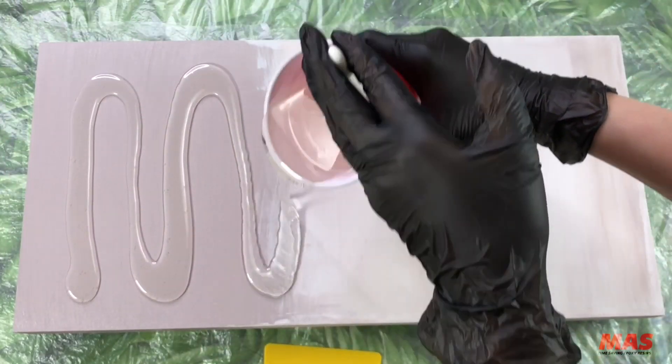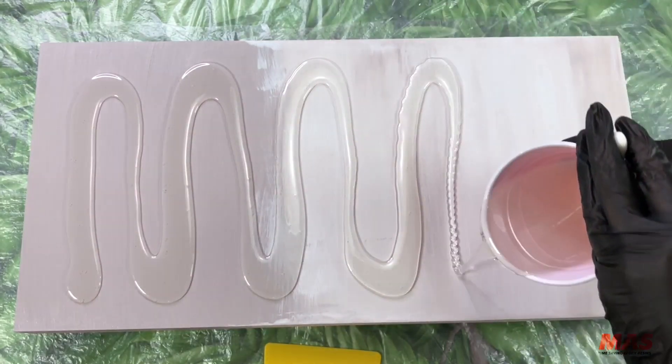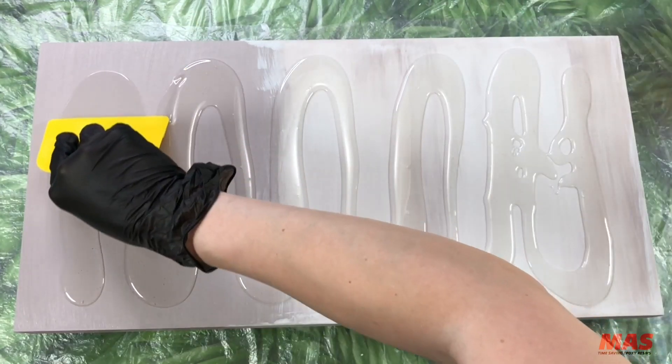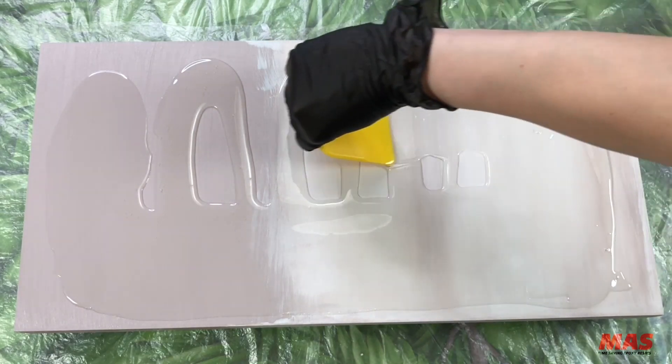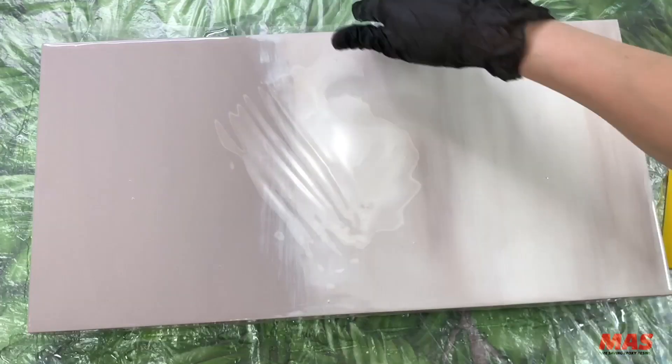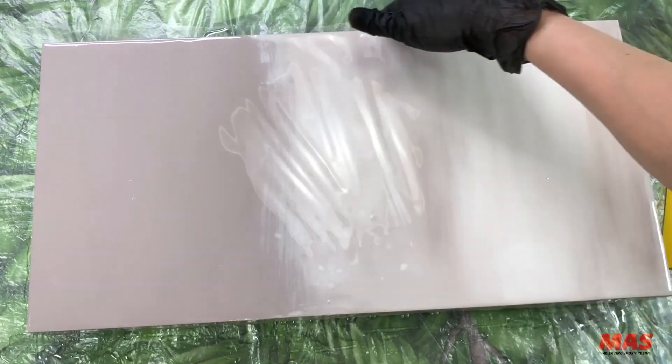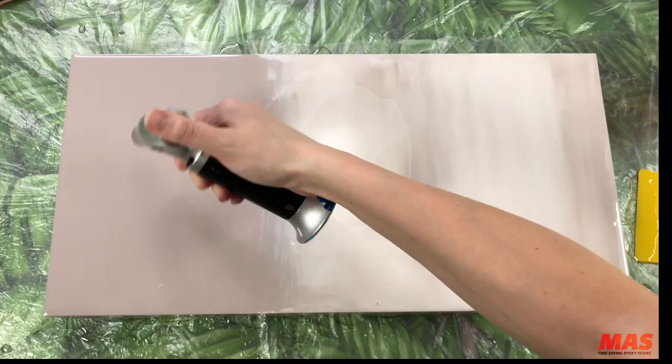I used moss epoxy's art pro system and I'll be using that throughout the rest of the video. Once your epoxy is evenly spread all of the bubbles are popped and you left it to cure it's now time to sand the surface.